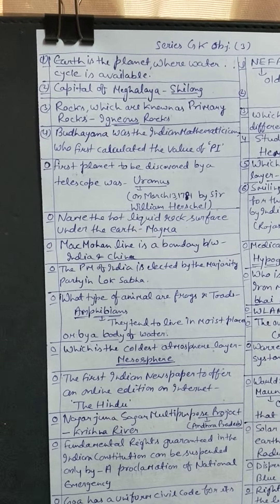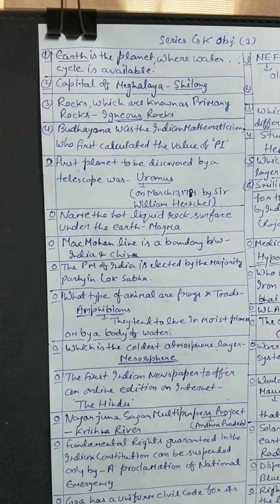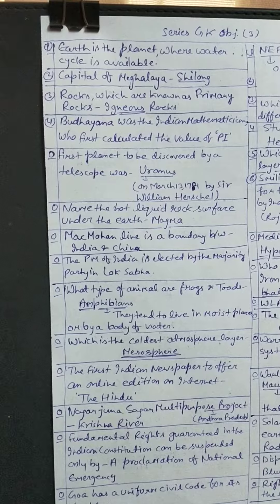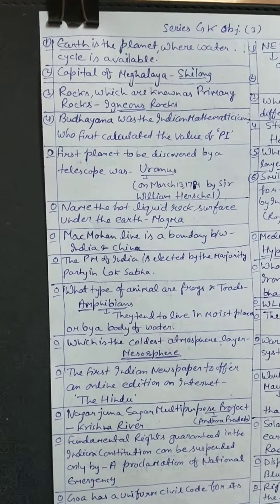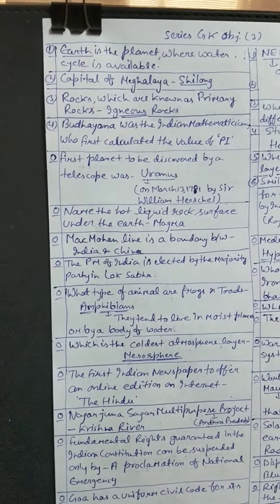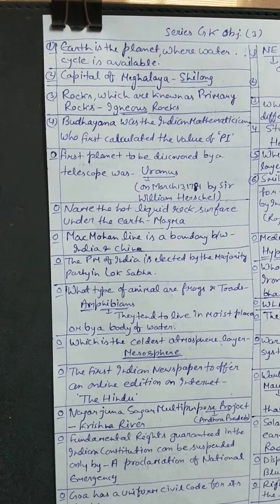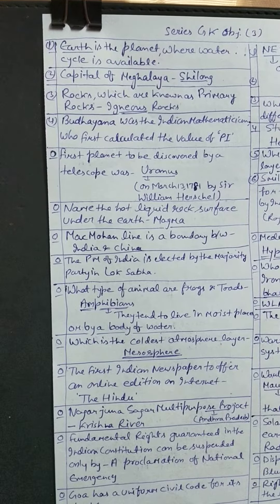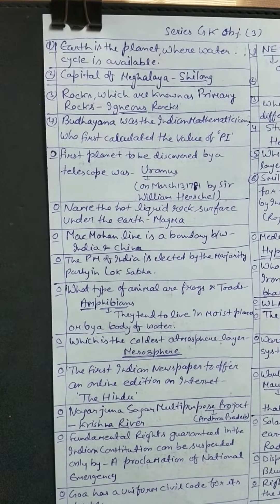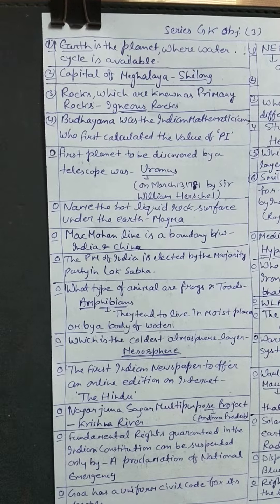Hello everyone, Series GK Objectives Part 3. First question: Earth is the planet where the water cycle is available. Capital of Meghalaya is Shillong. Rocks which are known as primary rocks are igneous rocks. Baudhayana was the Indian mathematician who first calculated the value of pi.